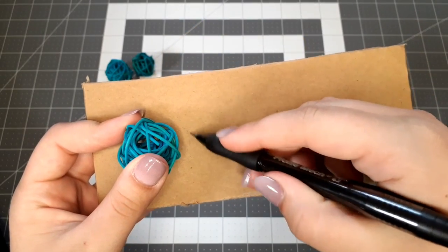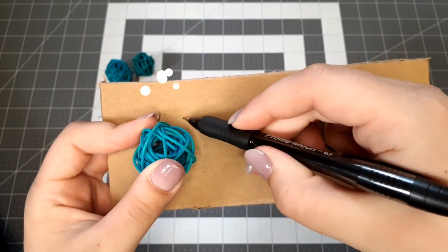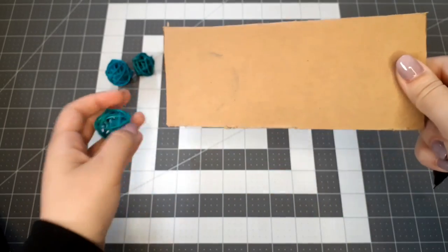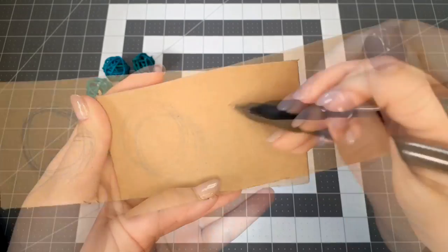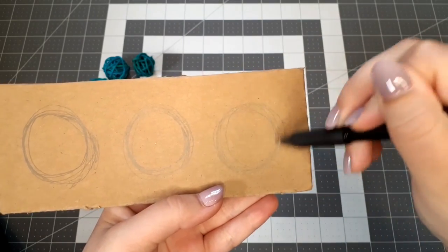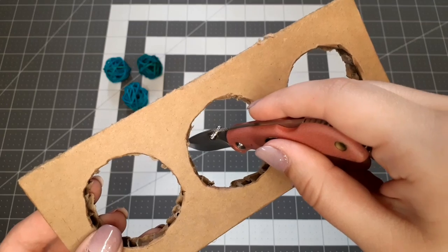Using a wicker ball as a guide, sketch out three circles that are slightly larger than it onto one of the thick pieces of cardboard. Now cut those circles out and enjoy this awful transition.